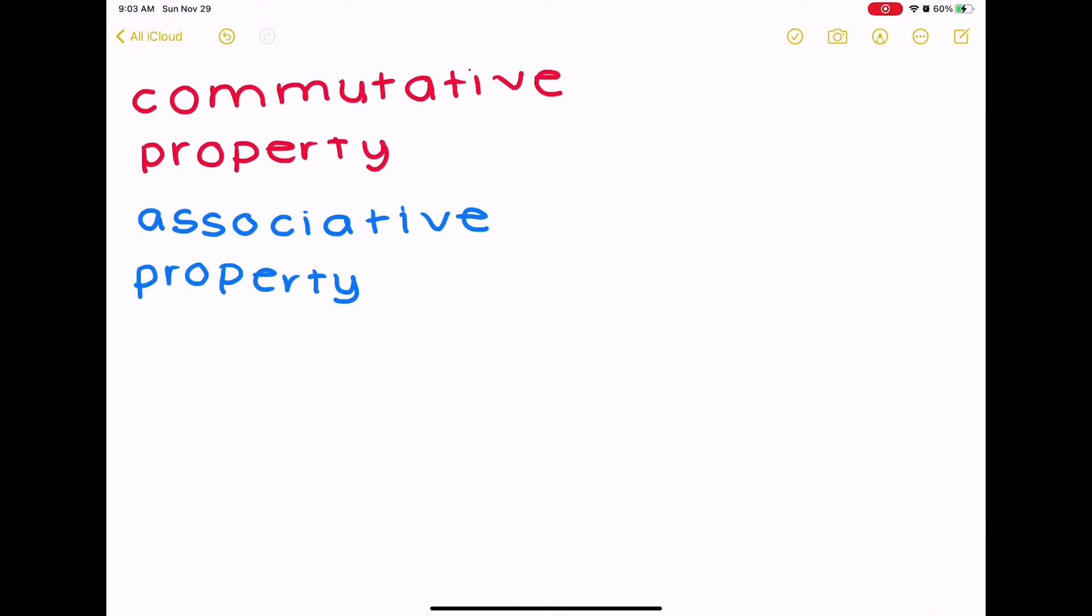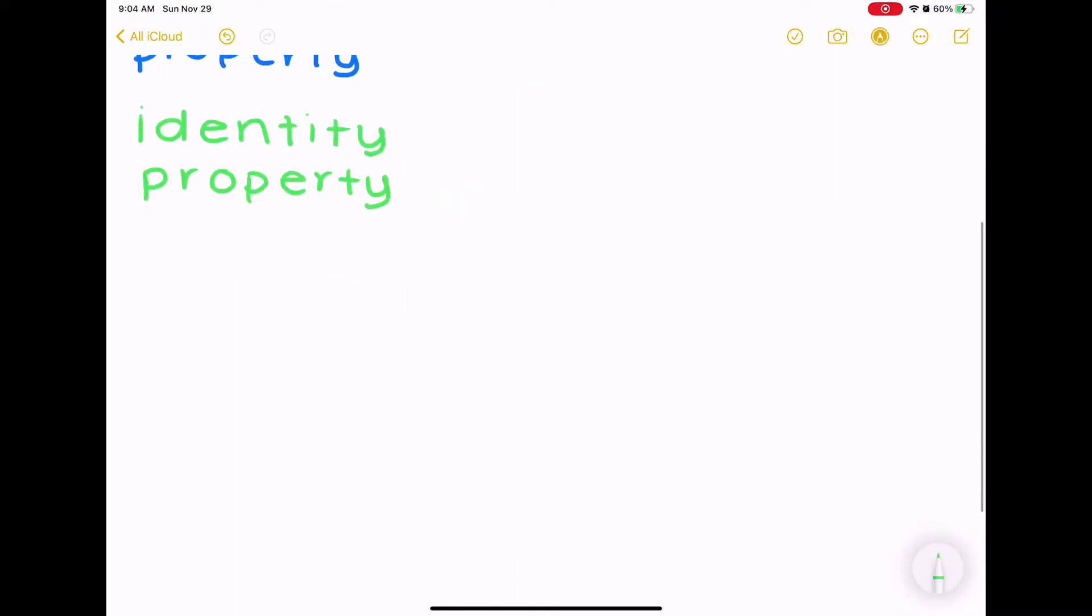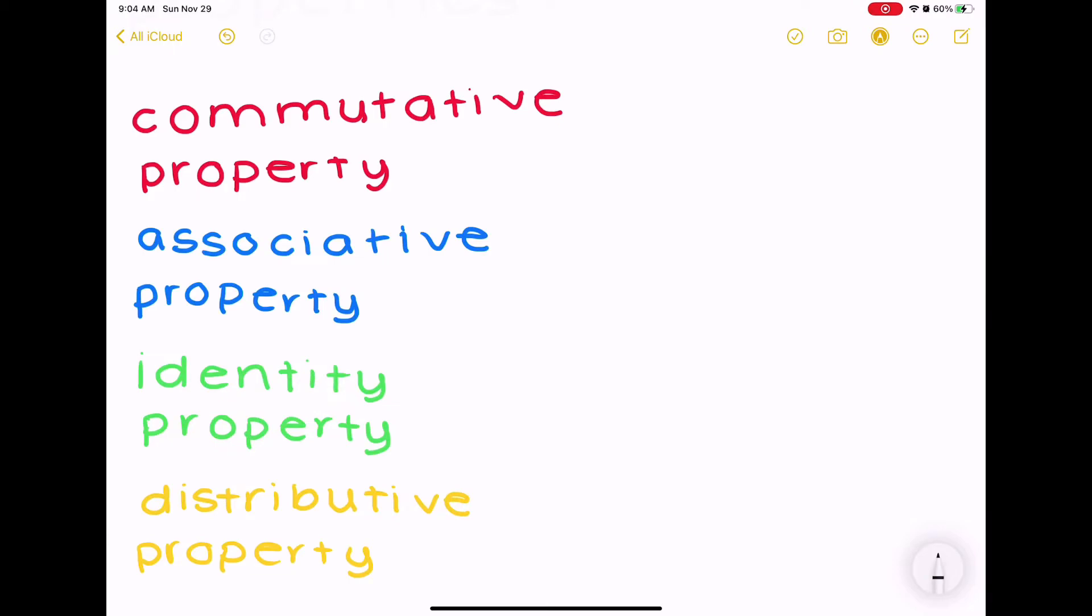So there's commutative property, associative property, identity property, and distributive property, as I said in the beginning of this video.